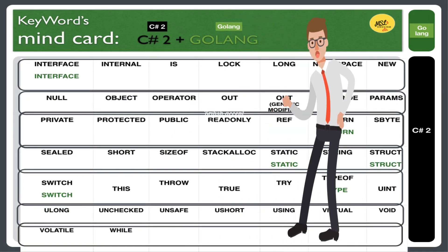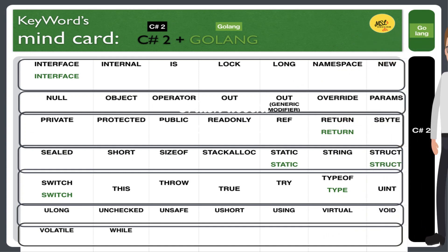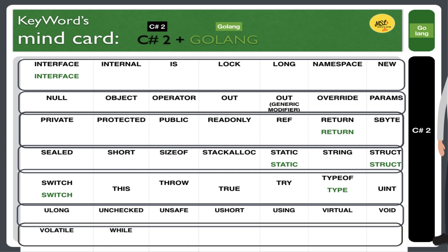Hi guys. Please listen to my British accent. Interface. Internal. Is. Lock. Long. Namespace. New. Null. Object. Operator. Out. Out — generic modifier. Override. Params. Private. Protected. Public. Readonly. Ref. Return. Sbyte. Sealed. Short. Sizeof. Stackalloc. Static. String. Struct. Switch. This. Throw. True. Try. Typeof. Uint. Ulong. Unchecked. Unsafe. Ushort. Using. Virtual. Void. Volatile. While.